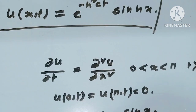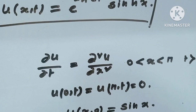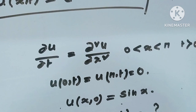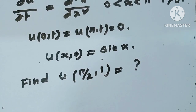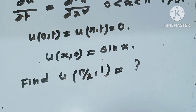Let's see a question: del u / del t = del²u / del x², with the condition 0 < x < π and t > 0, boundary conditions u(0,t) = u(π,t) = 0, and initial condition u(x,0) = sin(x). We have to find the value of u(π/2, 1).